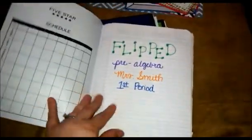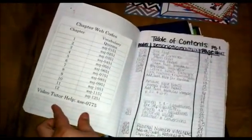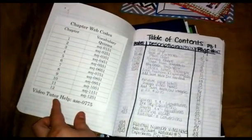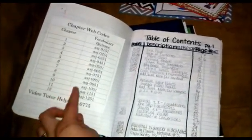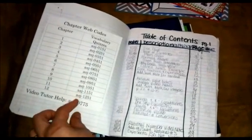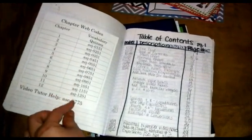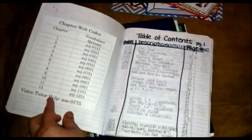In my composition book, I started with a cover page. I kept mine pretty simple. The kids decorated theirs up. And then each chapter that we went through with the book that we really don't use had web codes for them to take vocabulary quizzes and a video tutor online. So I wanted them to be able to have that as a reference.